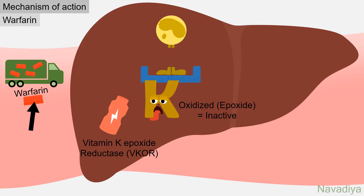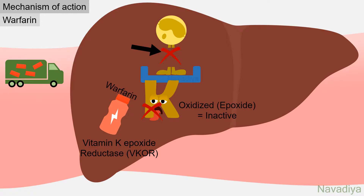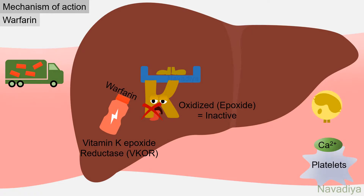When you give warfarin to a patient, it inhibits the vitamin K epoxide reductase enzyme. So vitamin K is not reactivated and stays in its inactive form. Without vitamin K, carboxylation of glutamic acid residues comes to a halt. These factors are then released into circulation without the carboxyl group, greatly reducing their ability to participate in coagulation — so they wander in circulation without doing their job, and coagulation is impaired.